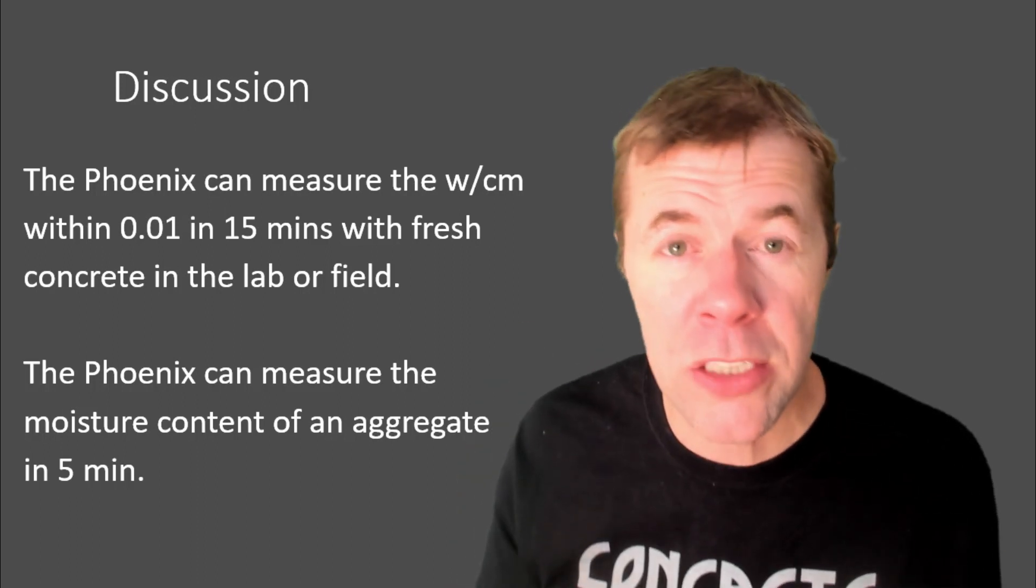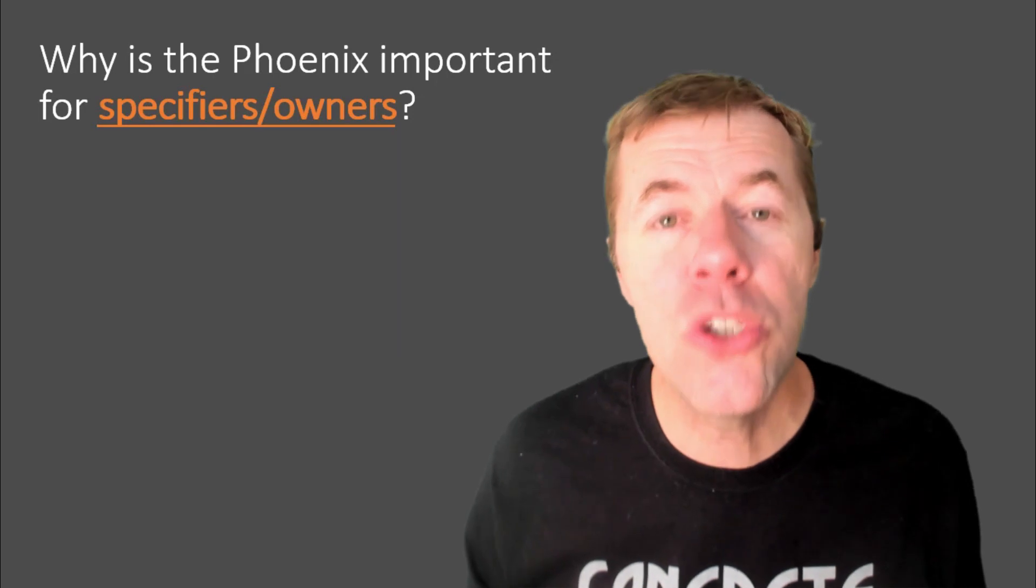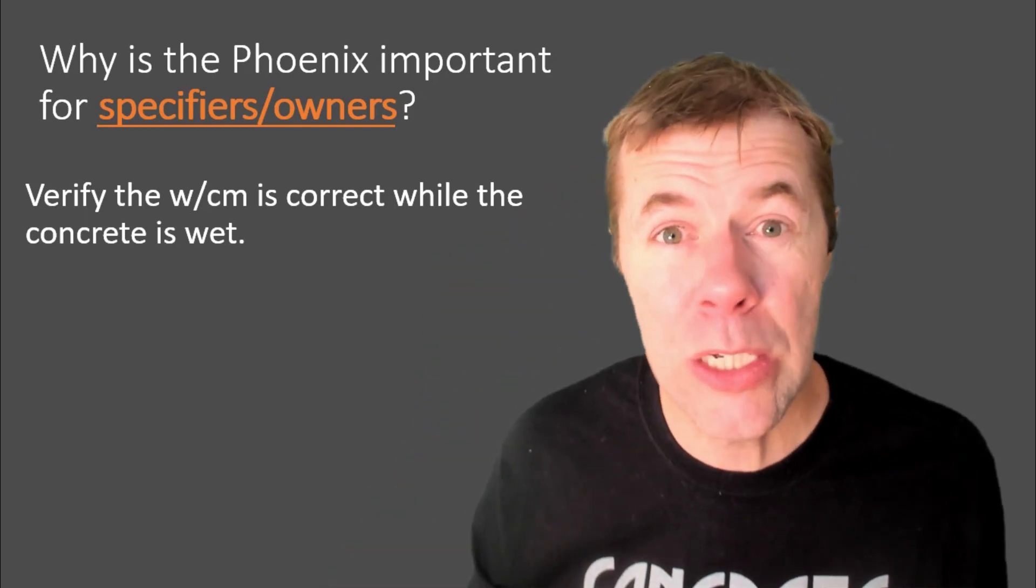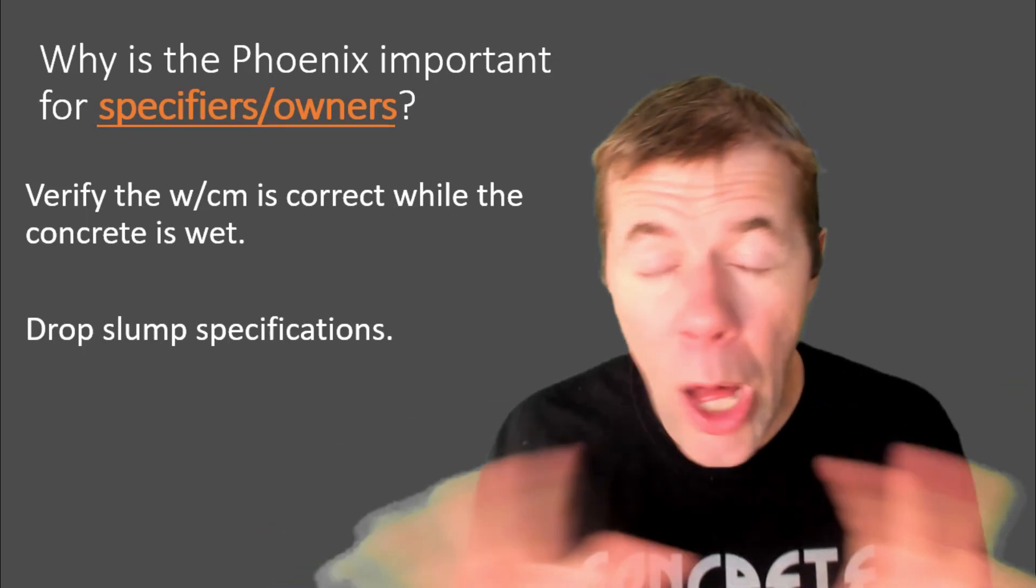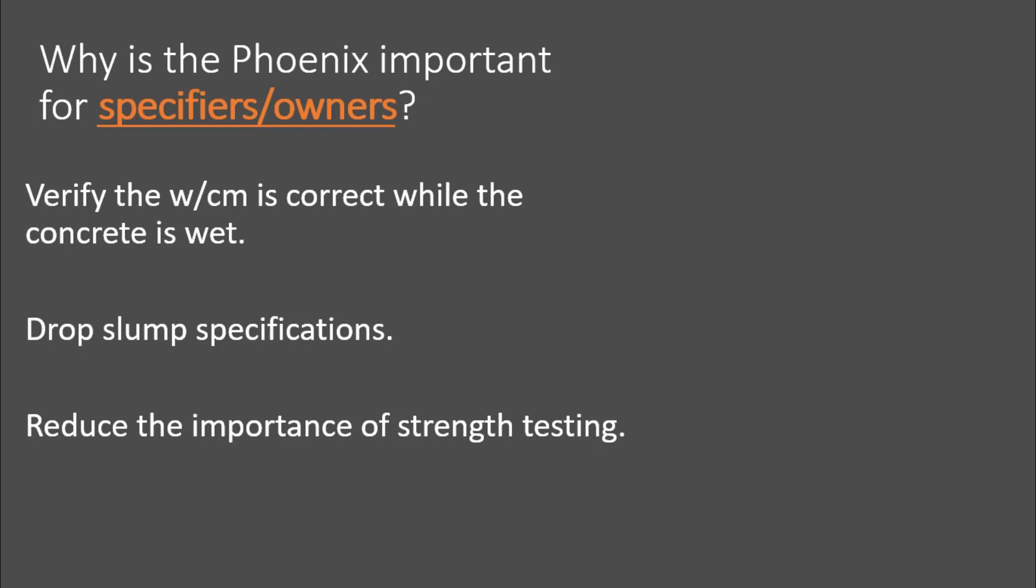It can measure the moisture content of your aggregates within five minutes if you want to do cook-offs. So if you are a specifier or an owner, why would you care about the Phoenix? Well, number one, you can verify your water-to-cement ratio is correct while the concrete is still wet, before it's been dumped out. How amazing is that? You can drop your slump specifications. They're not helping you. You don't need them. This is a much better approach. You can reduce the importance of strength. Now, I didn't say stop testing for strength. I just mean it's not as important. You don't have to wait 28 days. You could decrease some strength measurements because you know you're going to get strength if you get air content and your water-to-cement ratio correctly in your fresh concrete. And you will decrease your cost and improve your sustainability of your concrete because you won't have the over-designs.